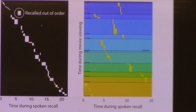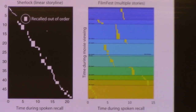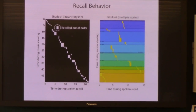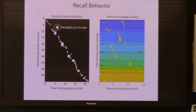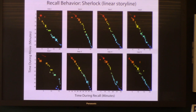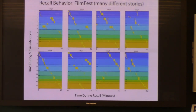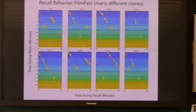It's an interesting piece of behavior. Within each little story, people give you a fairly accurate temporal reconstruction of events. But the movies are unrelated to each other and don't logically connect, so when people remember them, they don't necessarily remember them in the original order they were presented. Here are eight different subjects in Sherlock — it's pretty ordered across people. And here's a similar example from the Film Fest — you do get people who recall things mostly in order, but there's a lot of variability across subjects in what order they choose to describe the different movies.